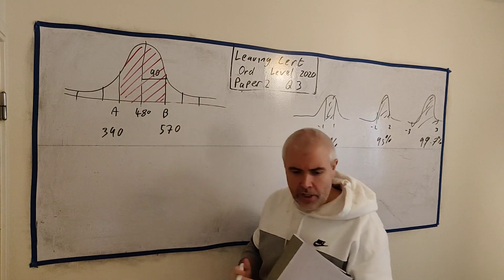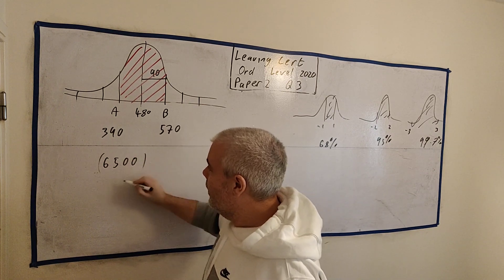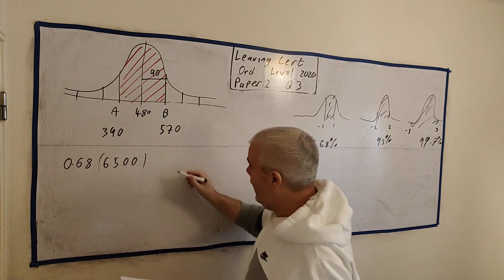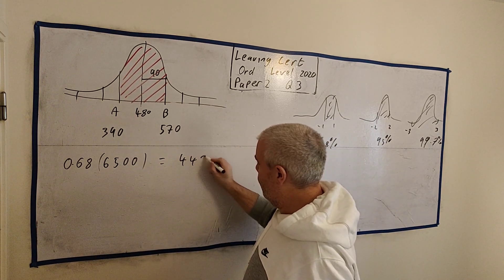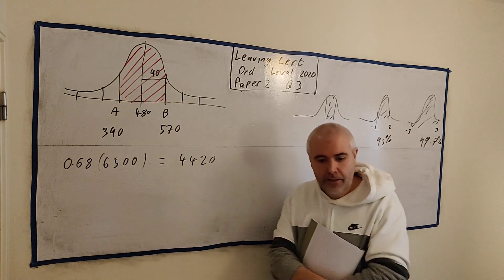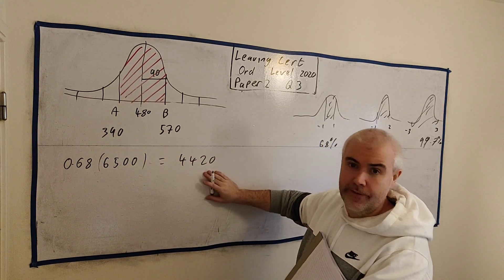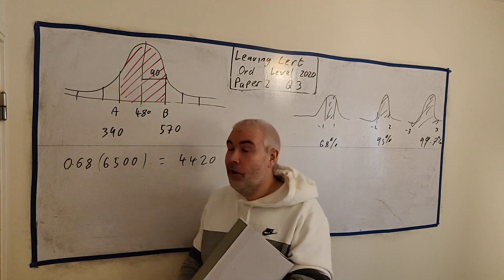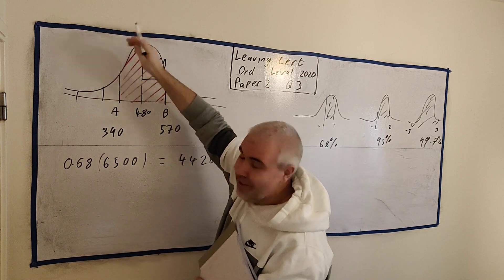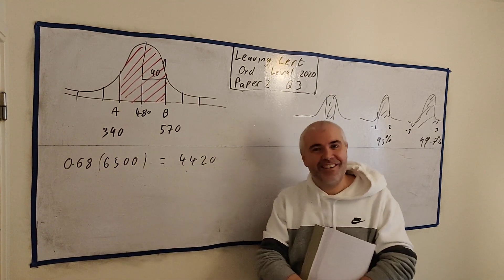Which I believe there was 6,500 people. Multiply that by 68%. And if we do that in a calculator, we will get 4,420 people. So I believe that answers this question. Estimate the number of people in the shaded region. I would estimate it's about 4,420. This is a rough number here. This is the answer to that question.